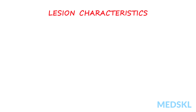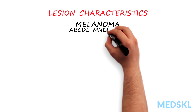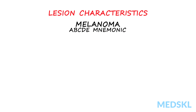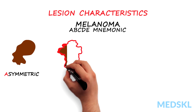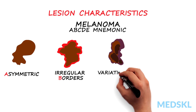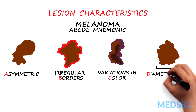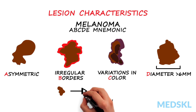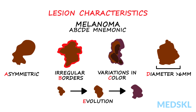It may meet criteria in the ABCDE mnemonic often used to evaluate pigmented lesions. Lesions suspicious for melanoma may be asymmetric, have irregular borders, have variation in color, have a diameter greater than 6 mm, or demonstrate change or evolution in size, shape, or color.